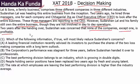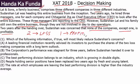Two years after handing over, Sudarshan was concerned that none of the companies except one is profitable — meaning two are loss-making, whereas only one is making profits. We do not know what was happening when he decided to let go, and we do not have prior information as to whether they were profitable earlier or not.